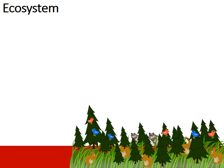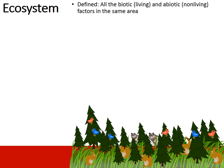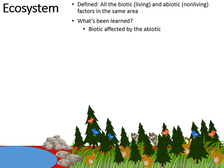Zooming out further, we come to the ecosystem. What's different here is that we're adding both the living and the non-living factors in the environment. We have a community because all the organisms are living, but in an ecosystem we add non-living elements like rocks and water. By studying ecosystems, we've learned that biotic life is affected by abiotic factors. For example, drought can reduce plants' ability to grow, and rocks release phosphorus into the soil enabling plants to grow as part of a healthy ecosystem.